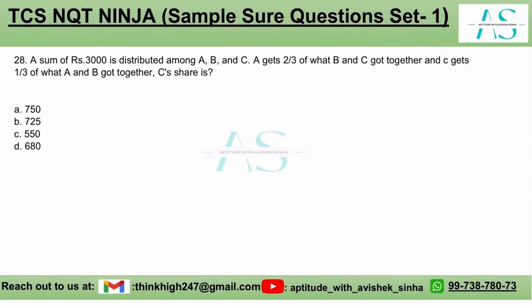Okay, an interesting question on partnership, but we can always have an easier approach to tackle this question. What is the total sum? The total sum is 3000. It is distributed amongst A, B and C in some certain proportion.